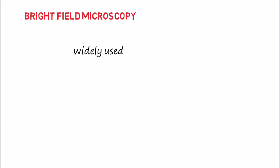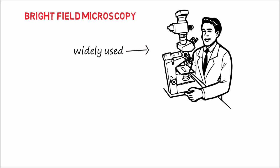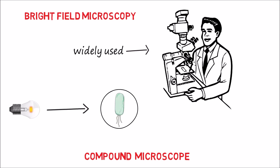Bright field microscopy is the most widely used microscope by students and professionals. It's important to understand the working principle of the compound microscope. In this microscope, the field is brightly lit using an external light source, and microorganisms appear dark.